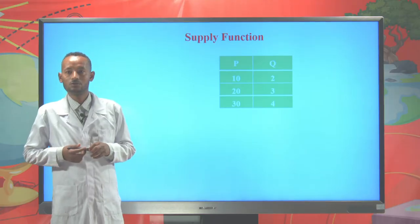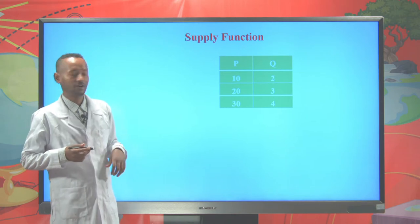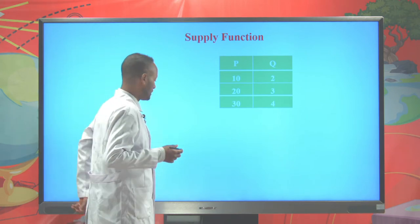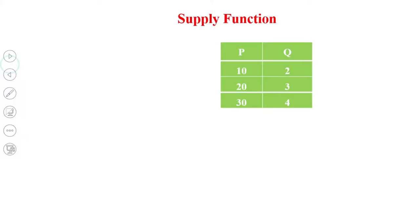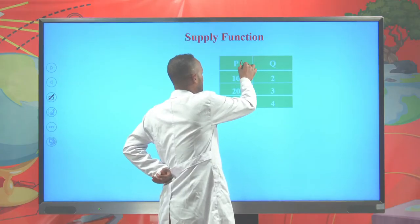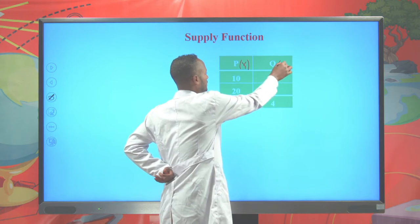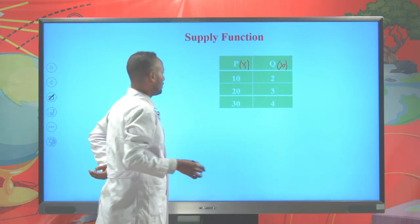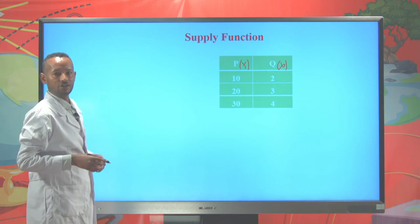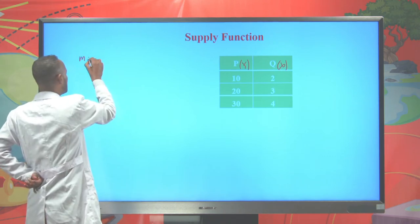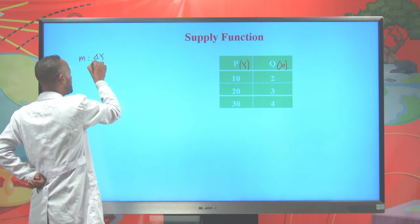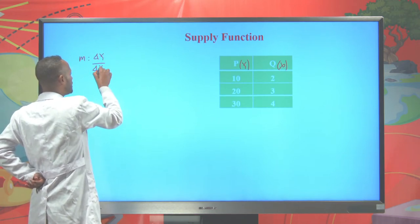Now let me show you the way of deriving the supply function from the given supply schedule. When we plot the supply curve, we represent the value of price in the y-axis and the value of quantity supplied in the x-axis. The first step to derive the supply function is calculating the slope. The slope is calculated by dividing the vertical difference, which is change in y, by the horizontal difference, which is change in x.